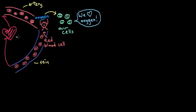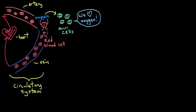Now that we know the basic components of our circulatory system and why they're so important — to circulate blood around our bodies so we can stay alive — I just want to focus for now on the main artery in our body, called the aorta.